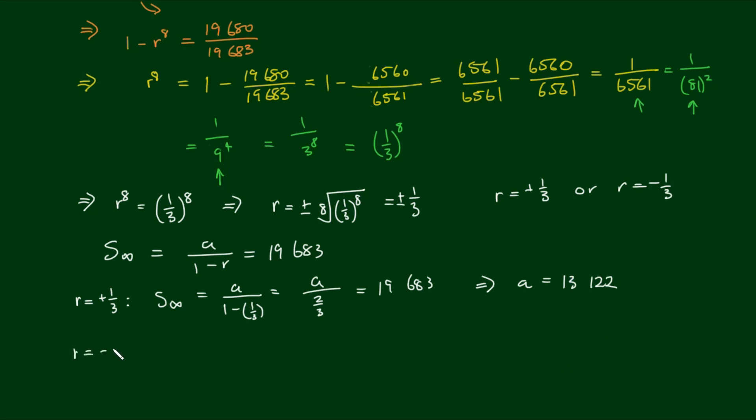In the case that r equals negative 1 third, the sum to infinity equals a on 1 minus negative 1 third, which equals a on 4 thirds, and that also equals 19,683.